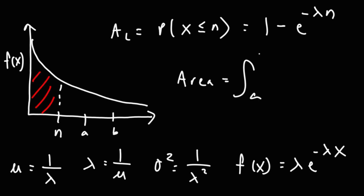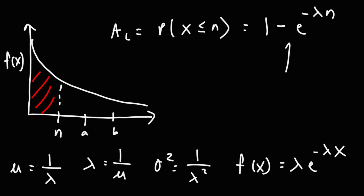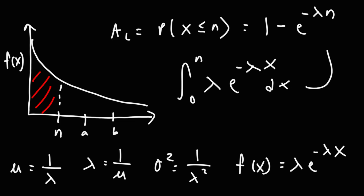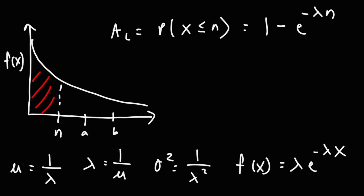The area of the shaded region is the definite integral from a to b of f of x dx, where a to b could be from 0 to n or something else. That's how you get the cumulative formula by integrating the density function. So if we integrate from 0 to n of lambda times e to the negative lambda x dx, it gives you that formula. For those of you who have taken calculus, you could try that yourself and prove it.